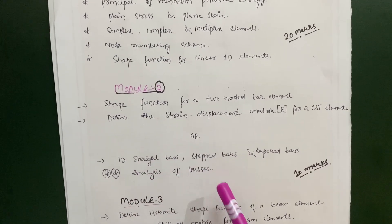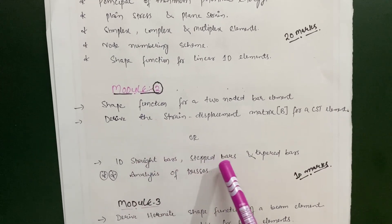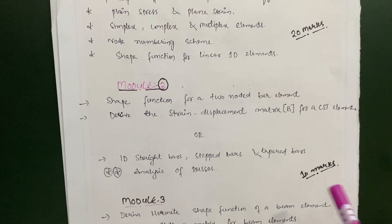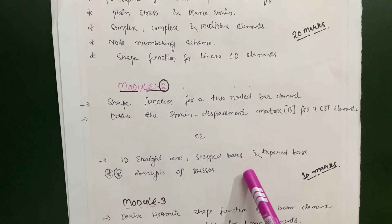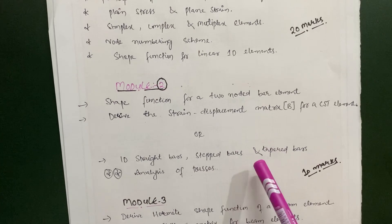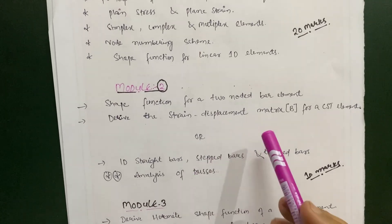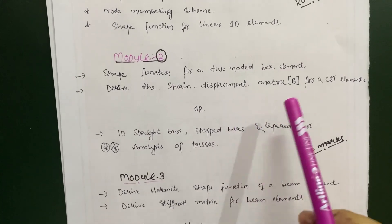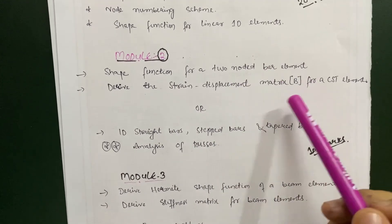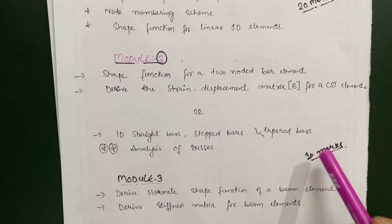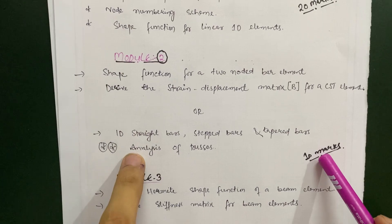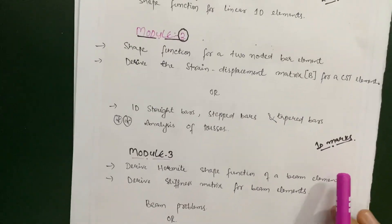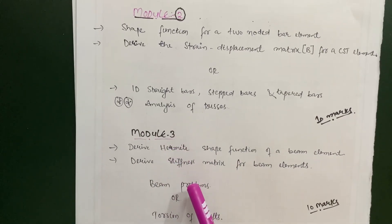In Module 2, topics include analysis of trusses, 1D bars, stepped bars, and tapered bars. These problems are lengthy but easy. Choose according to your own convenience — either the derivation part or the problem part. If you go through the problems, you can easily get 10 marks; if you do both derivations and problems, you will get 20 out of 20 in this module as well.